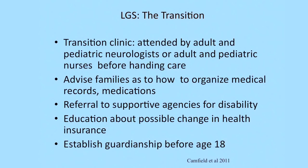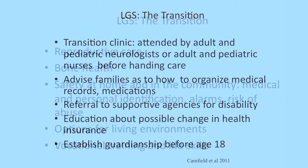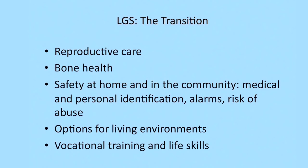It is important to educate families about what will happen during transition into adult practice — advising them to obtain guardianship before age 18, advising on possible changes in health insurance, referring them to supportive agencies for disabilities, and helping them organize medical records and medications. Things to address as these kids become teenagers and young adults include bone health from exposure to multiple anti-epileptic medications, safety at home and in the community, personal and medical identification alarms, the high risk of abuse in patients with developmental disabilities, and options for different living environments, vocational training, and life skills.